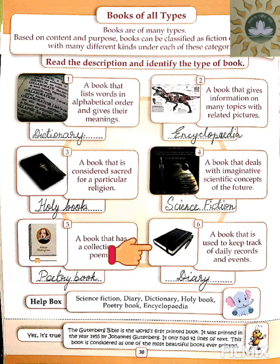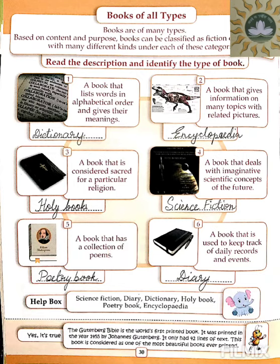And number six: a book that is used to keep track of daily records and events — where we write down what happened each day, what we ate, various information, and important events or tasks we need to remember on a specific date. The book where we write all of this down is called a diary.